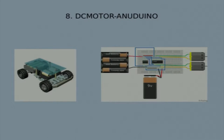We have interfaced two DC motors with the Anudino board. DC motors are widely used by students to develop robots, and making robots is now a craze among students. Since various sensors can also be interfaced with Anudino, the Anudino has the power to drive a complete robot.